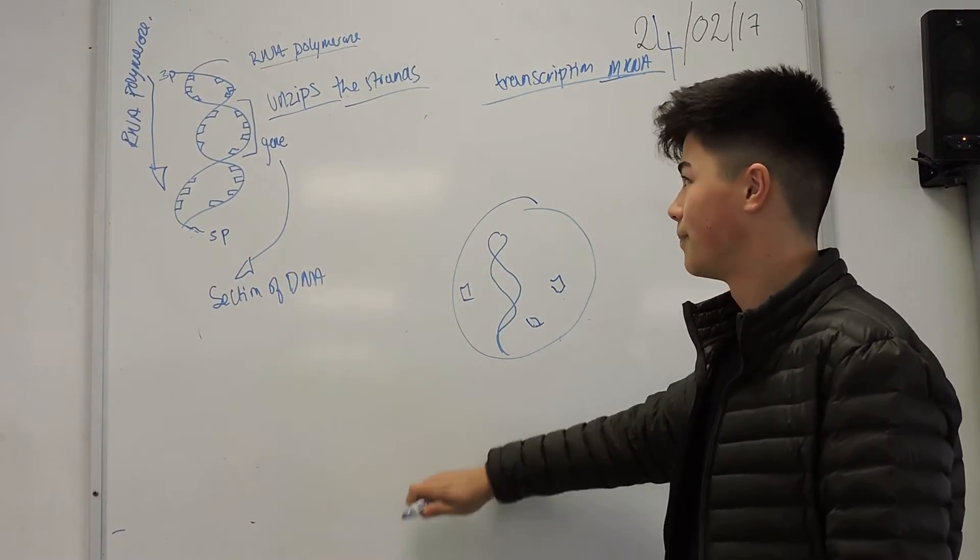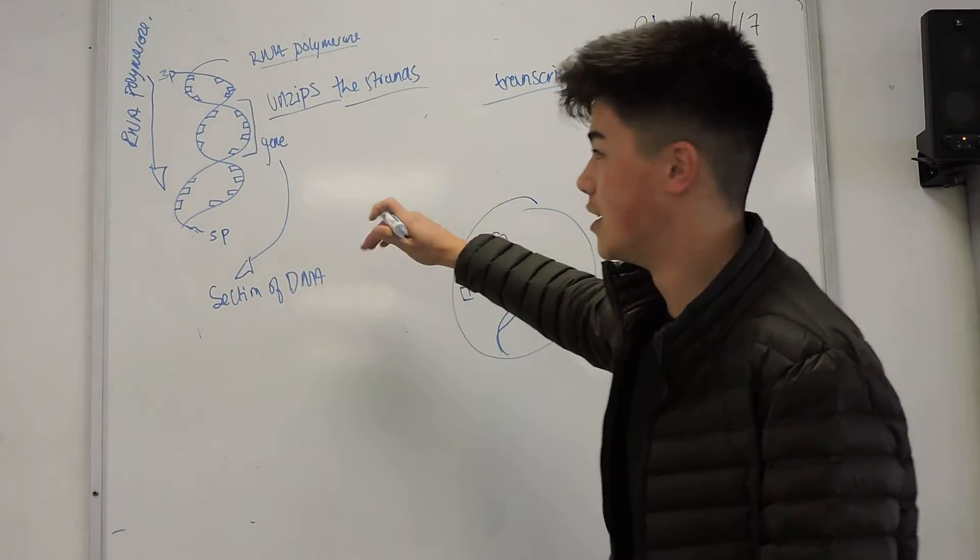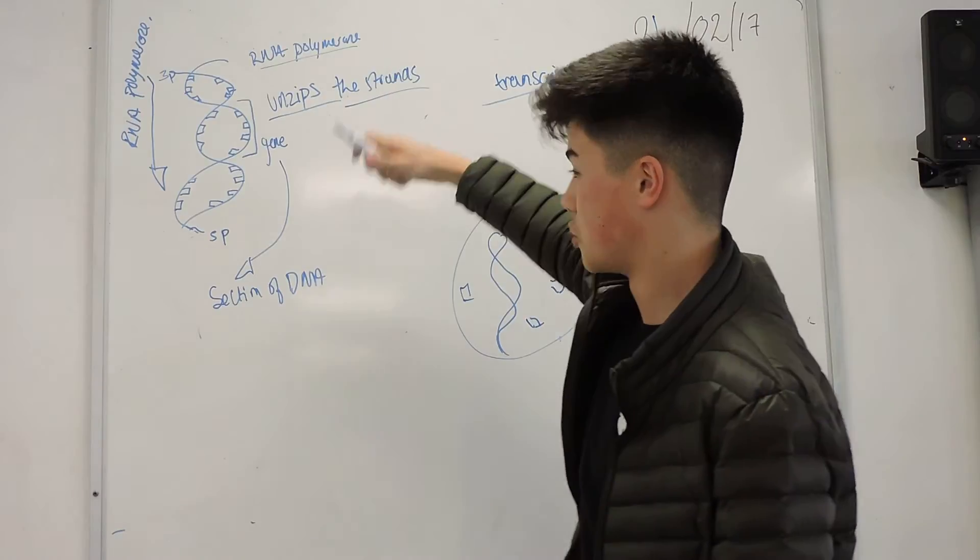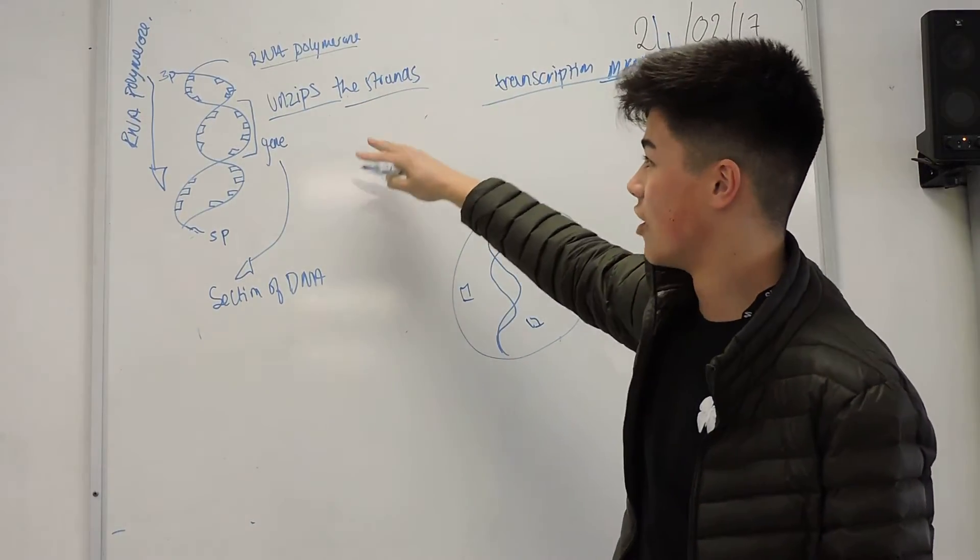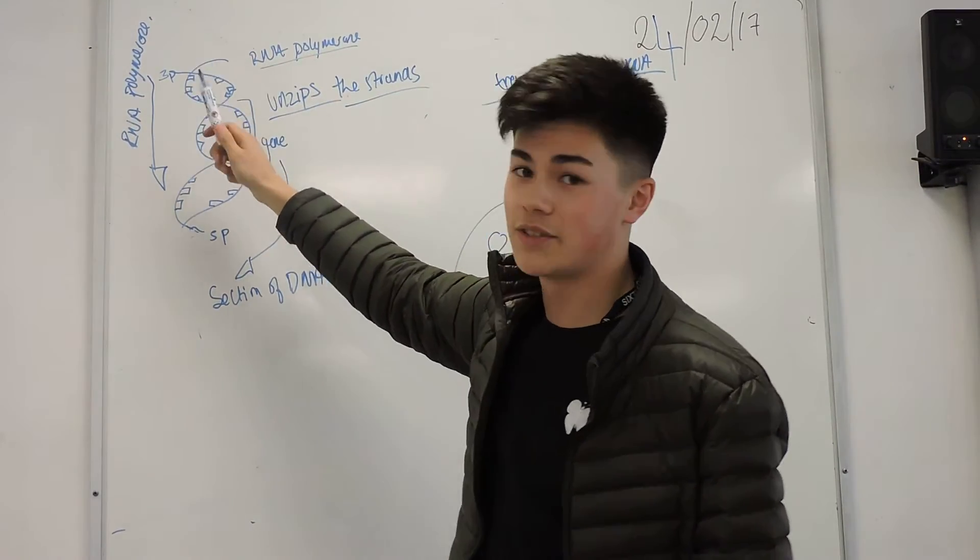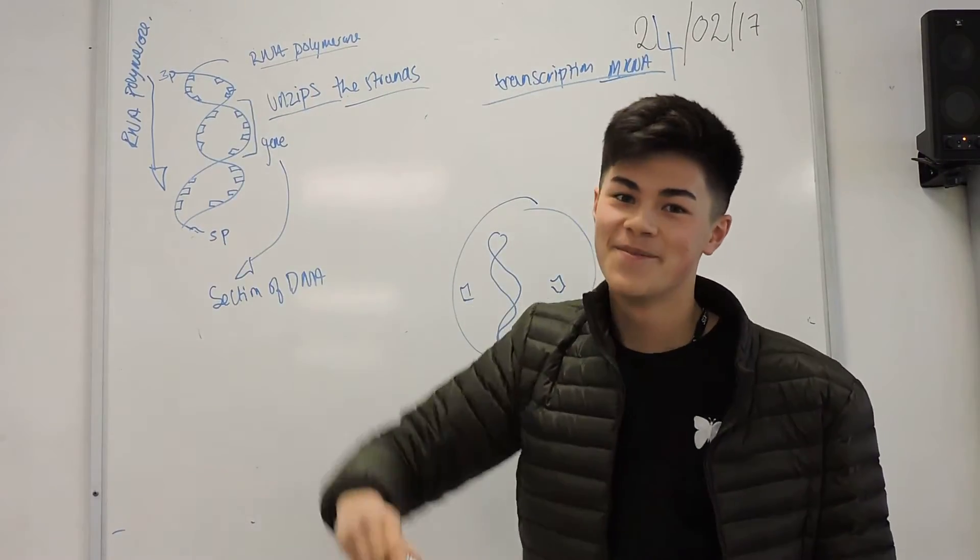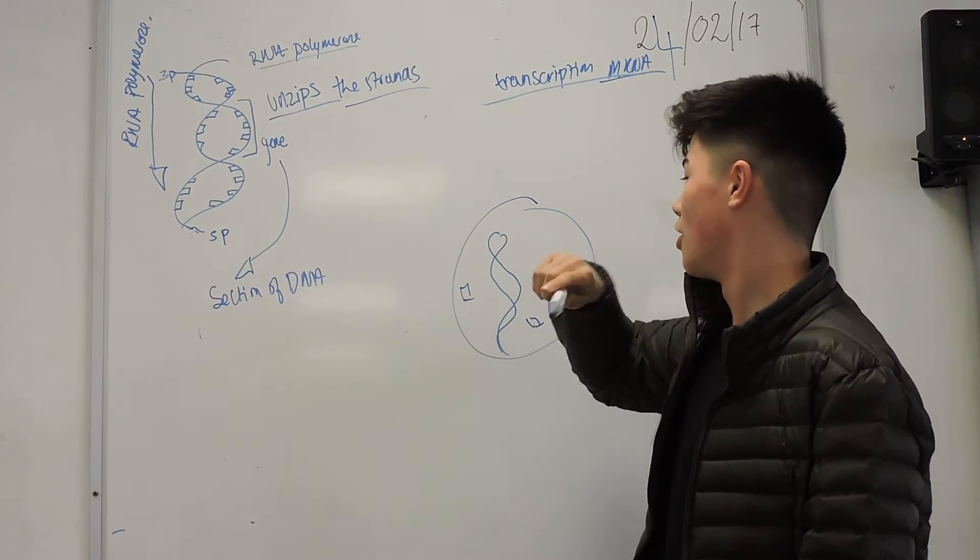Focusing on transcription, we start with messenger RNA. First, this is a DNA double helix strand, two strands. RNA polymerase, which is an enzyme, will come along and attach to the three-prime end. The active site is complementary to the three-prime strand, and it will work its way down the DNA strand, unzipping it.